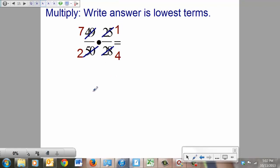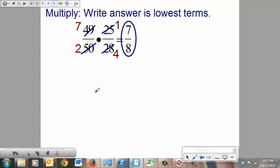25 and 50, that's a 1 and a 2. Multiply the tops and the bottoms, going to give you 7/8. Circle your answer. So did you find them before you multiplied? I hope so. Would have made that problem a lot easier.